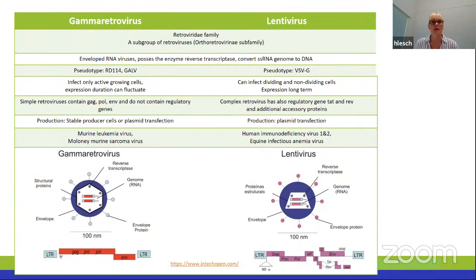Viruses have a single-stranded RNA genome that is reverse-transcribed to DNA. Virus tropism — or vector tropism — is altered by pseudotyping, meaning you can change the viral natural envelope with another envelope from another virus. Gamma retroviruses are typically pseudotyped with modified versions of the cat endogenous retrovirus RD114 envelope or modified gibbon ape leukemia virus GALV. Lentiviruses are typically pseudotyped with vesicular stomatitis virus G. Retroviruses infect only dividing cells, whereas lentiviruses can infect both dividing and non-dividing cells.